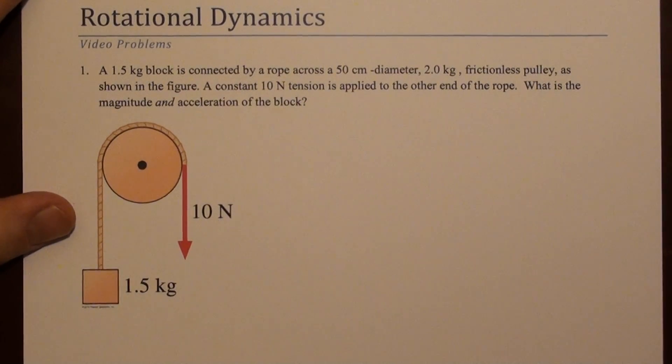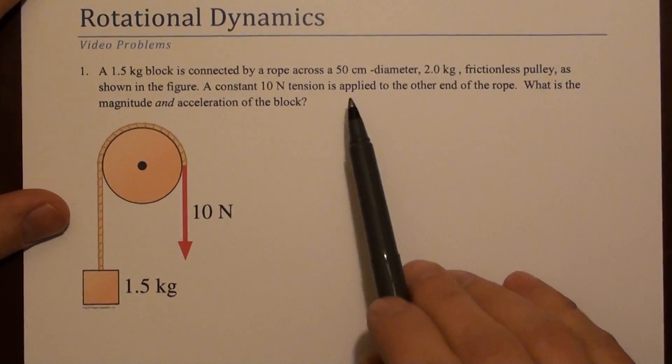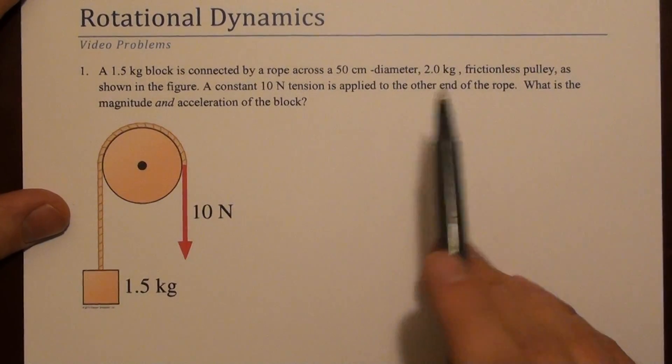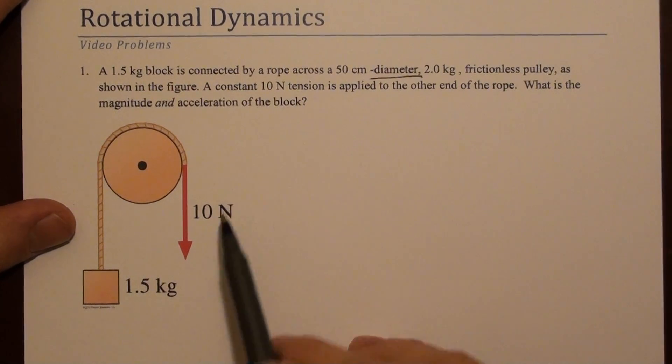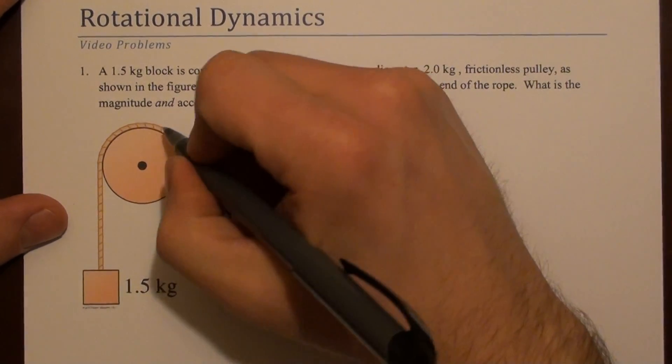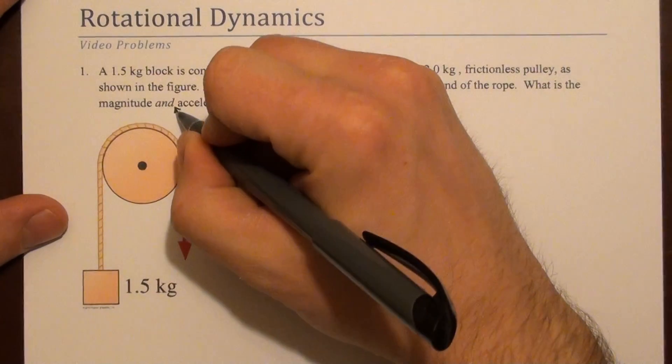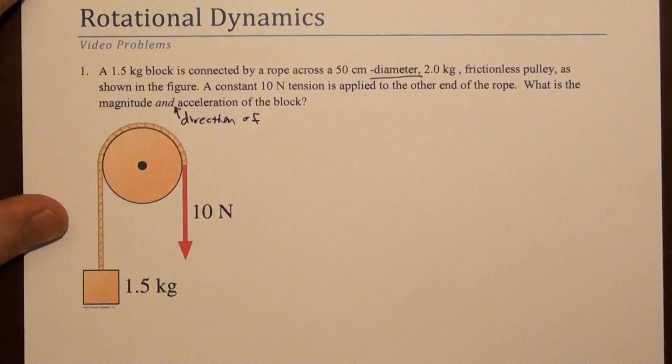So this is a rotational dynamics question. We're given that a block is connected to a rope across a 50 centimeter diameter, 2 kilogram frictionless pulley, that means there's no friction in this axle, as shown in this figure. A constant tension is applied to the other end of this rope.